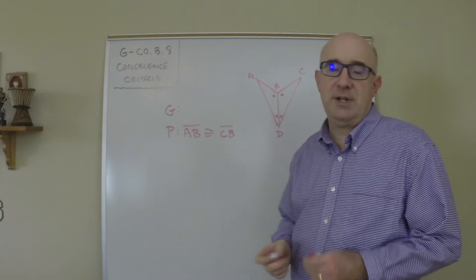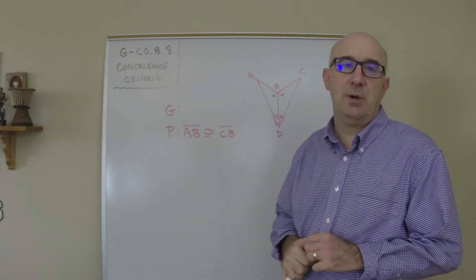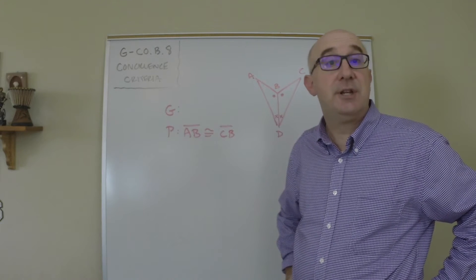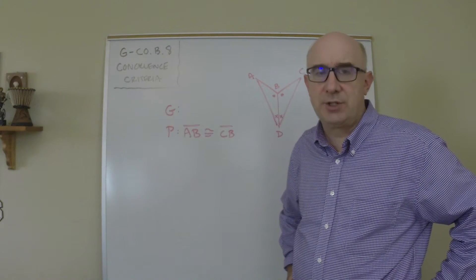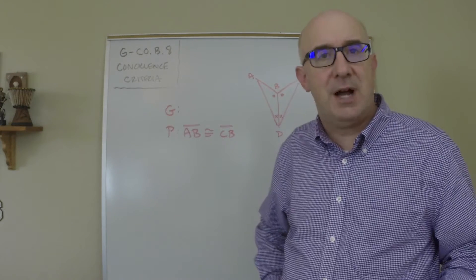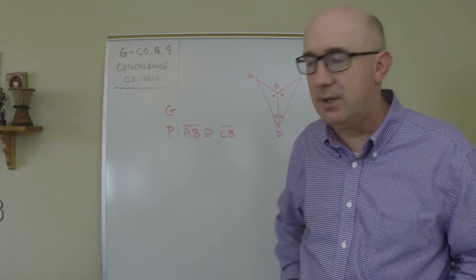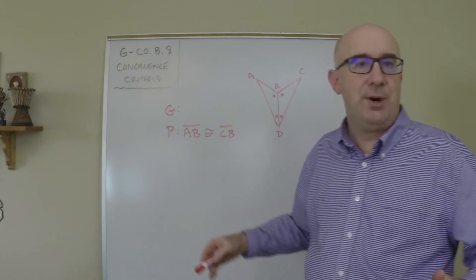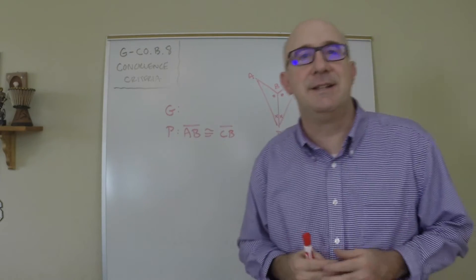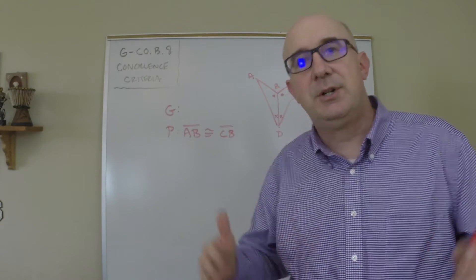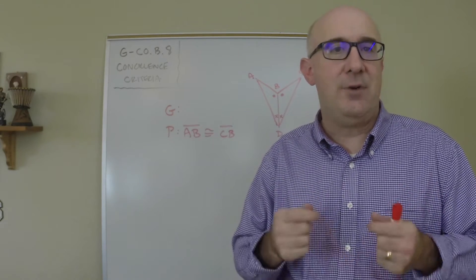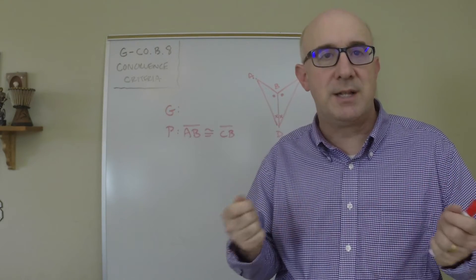We're still looking at Objective COB8, dealing with proving and establishing things to be congruent using congruent triangles. In Worksheet 4, we introduce the idea of how to prove not just triangles to be congruent, but maybe to prove lengths or angles to be congruent. The general idea is to first establish congruent triangles, and then if the triangles are congruent, they have all their corresponding parts that are also congruent.